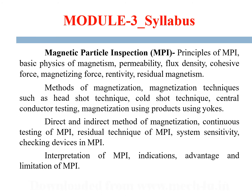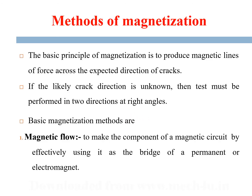The basic principle of magnetization is to produce magnetic lines of force across the expected direction of the crack, so that flux leakage will occur. Due to the flux leakage, when you apply the magnetic particles they form a lump, which can be viewed under visible light or fluorescent light. If the likely correct direction is unknown, the test must be performed in two directions — we provide the magnetic field in one direction and then reverse it 90 degrees.